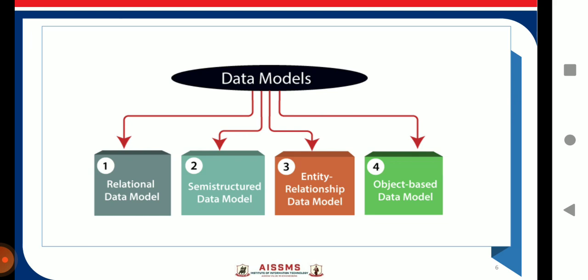Then the second is entity relationship data model. An ER model is a logical representation of the data as objects and relationships among them. These objects are known as entities and relationship is an association among these entities. This particular model was designed by Peter Chen and it was published in 1976.